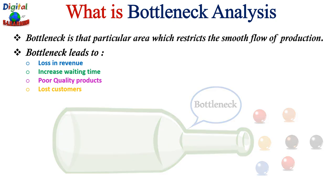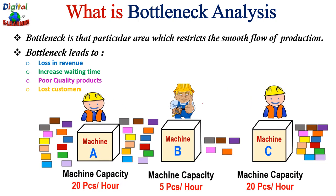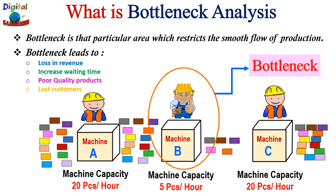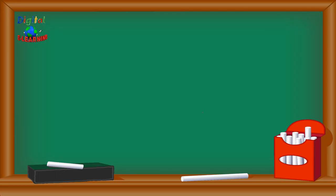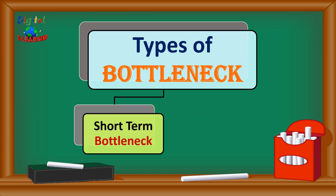Let us take one manufacturing example. Machine A has a capacity of 20 pieces per hour, Machine B has a capacity of 5 pieces per hour, and Machine C has 20 pieces per hour. In this case, Machine A can process more parts but Machine B is not efficient enough to produce that many parts — that is why Machine B is the bottleneck here.